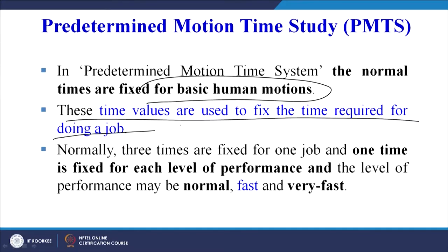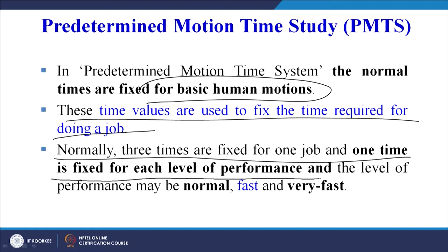The most commonly used PMTS is methods time measurement (MTM). Normal times are fixed for basic human motions, typically three times for one job — one for each level of performance: normal, fast, or very fast. Tables provide times for different performance levels, and we will cover this with examples when we study PMTS in detail.